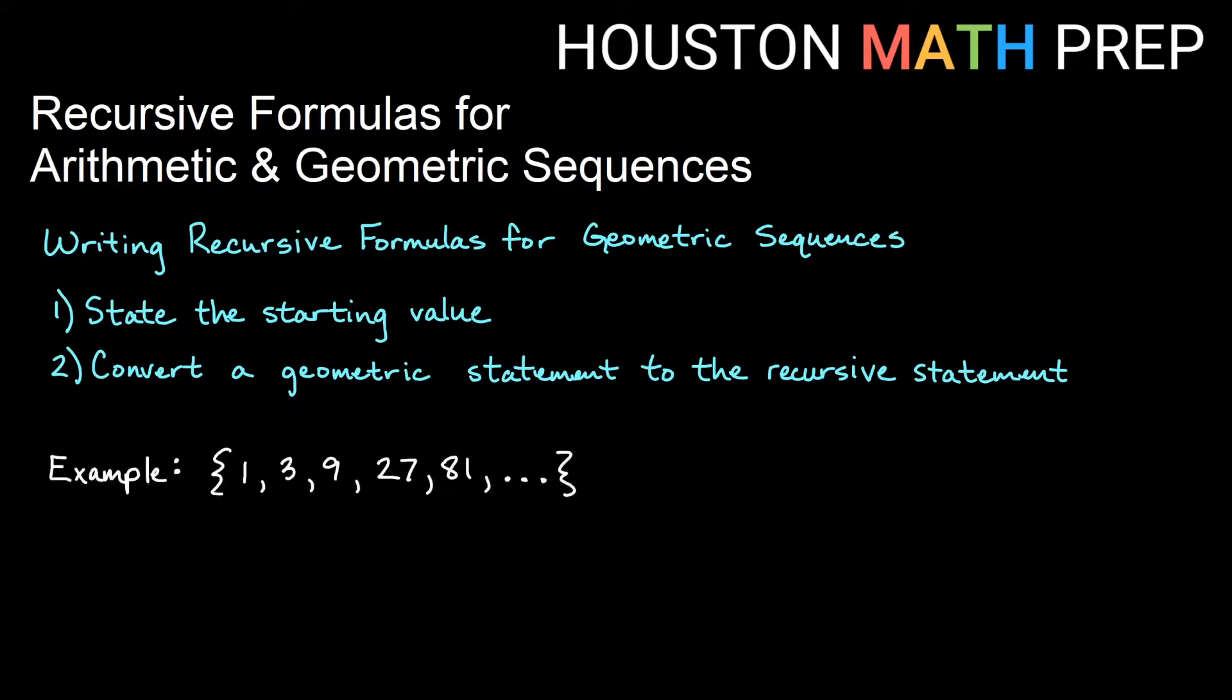So if I look at this example, 1, 3, 9, 27, 81, you can see maybe that we are repeatedly multiplying by 3. We start at the number 1 and each term is 3 times the term before.